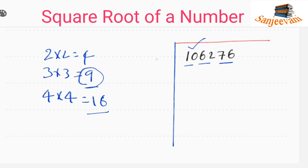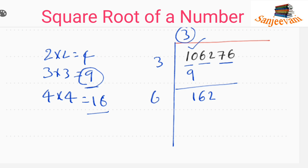We subtract: 10 minus 9 gives 1. Then we drop the next pair, which is 62, giving us 162. Now we have to double the number 3, which gives 6. We write 6 here, and next we have to place a digit that will be multiplied with itself.